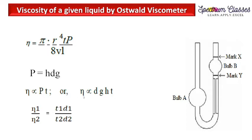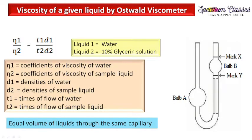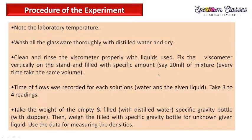Similarly for liquid 2: η₂ ∝ d₂·t₂. Dividing both equations, we finally get: η₁/η₂ = (t₁·d₁)/(t₂·d₂), where liquid 1 is water and liquid 2 is the 10% glycerin solution. There is no strict condition on which is liquid 1 or liquid 2 — you can interchange them. To measure equal volume through the capillary we need to record the time of flow between the etched marks.